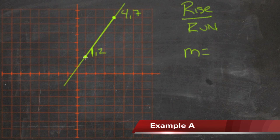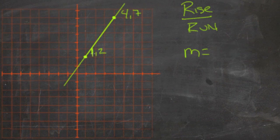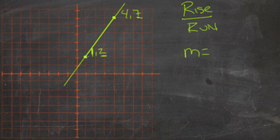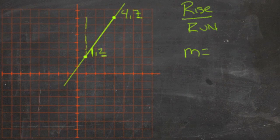So let's take a look first at the rise. We're going to go from 2, which is the y coordinate here, up to 7, which is the y coordinate there. So we're going up 5. So our rise here is 5.